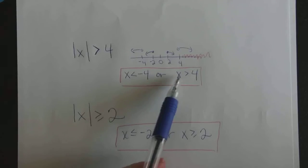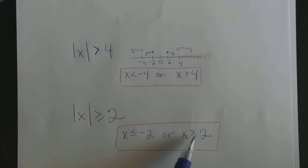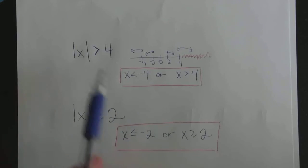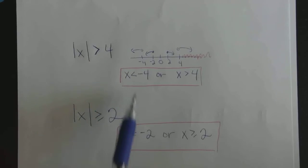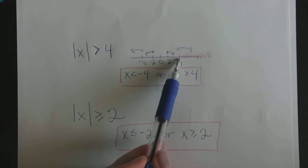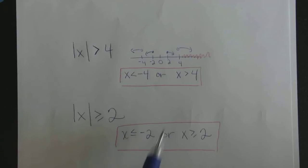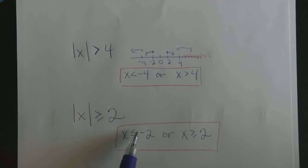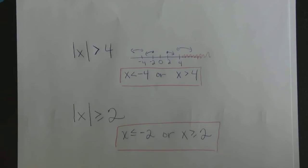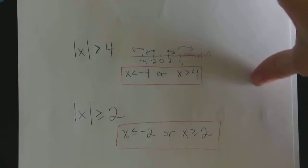Notice the pattern: in Example 1 we got x > 4 and x < -4; in Example 2 we get x ≥ 2 and x ≤ -2. The solutions kind of mimic the original problem — one side matches the inequality direction, and the other side gets the negative version of the edge value, going off in the opposite direction from 0. A pattern is emerging in these solutions.